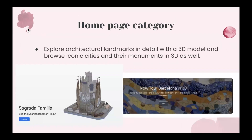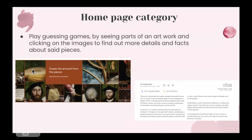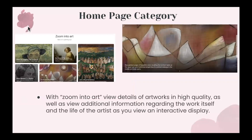You can also explore architectural landmarks in detail with a 3D model, and browse iconic cities as well as their monuments in 3D. You can also play guessing games — they show you a piece of an artwork, and you have to click on the images to find out more details and facts about the pieces. It's called Guess the Artwork from the Pieces. You can also do an activity called Zoom Art, where you view details of artworks in high quality and learn additional information about the work itself and the life of the artists as you look through the interactive display at a zoomed-in lens.